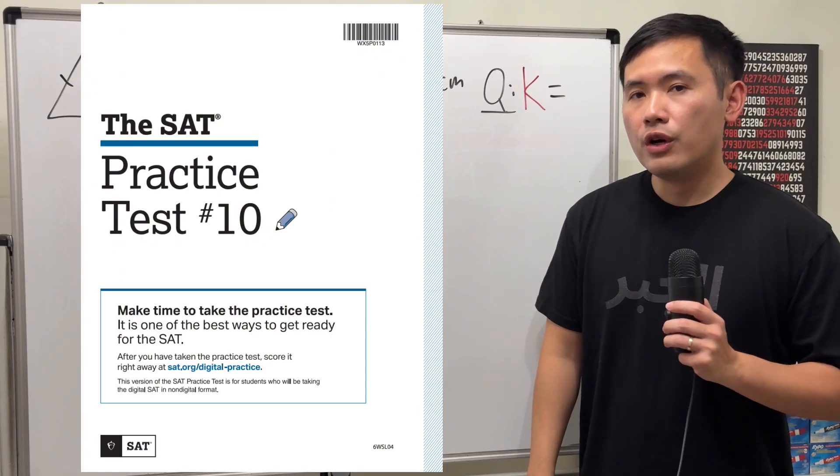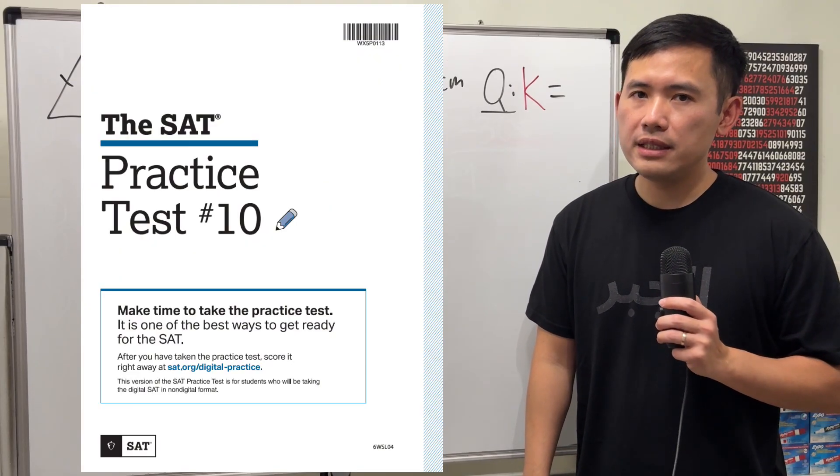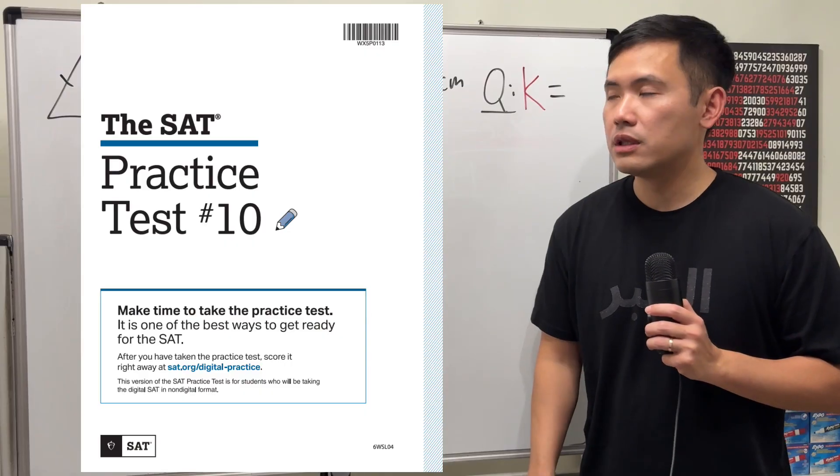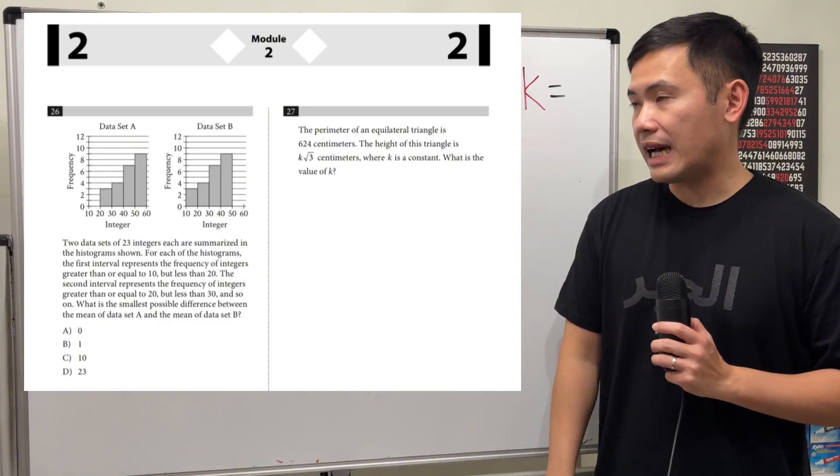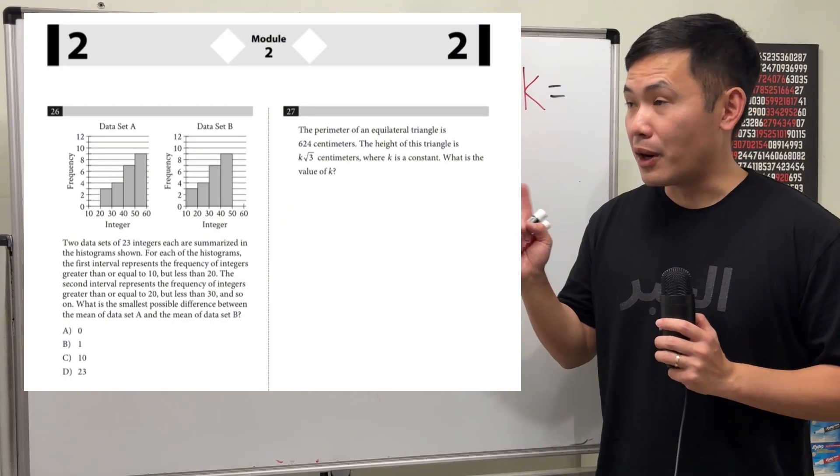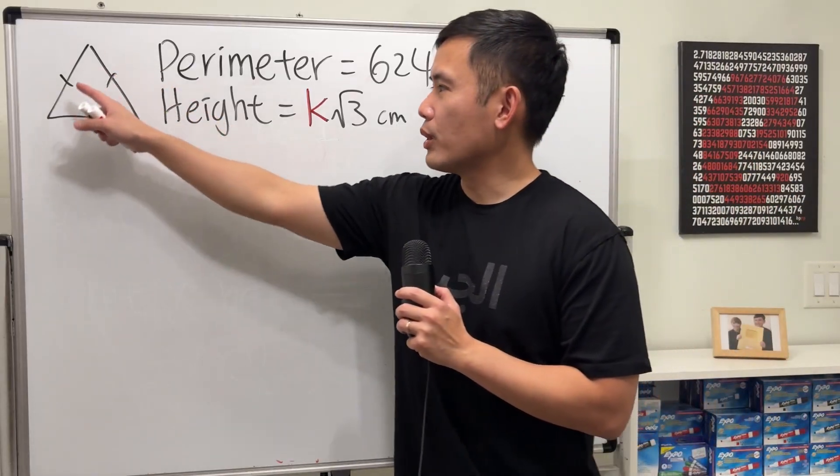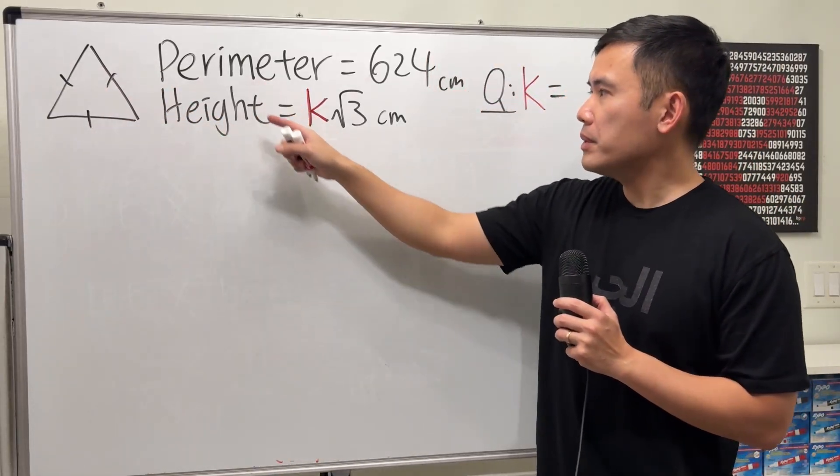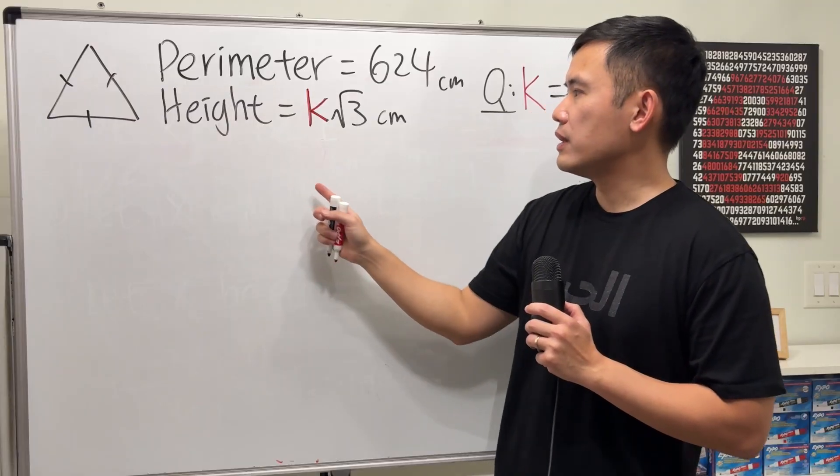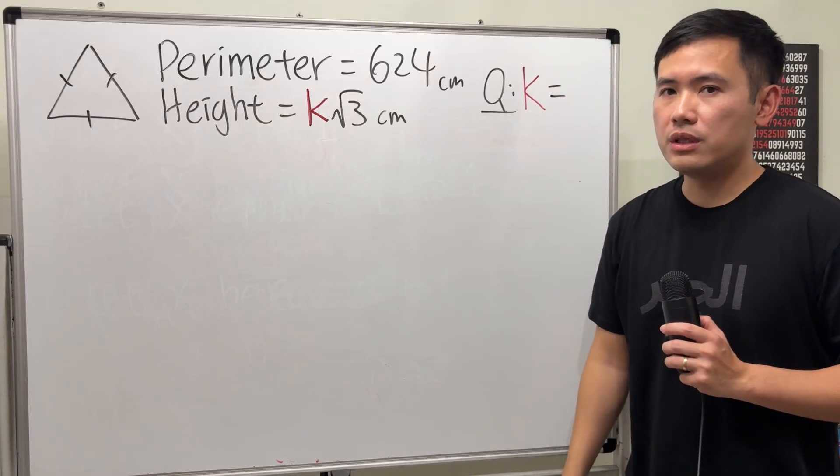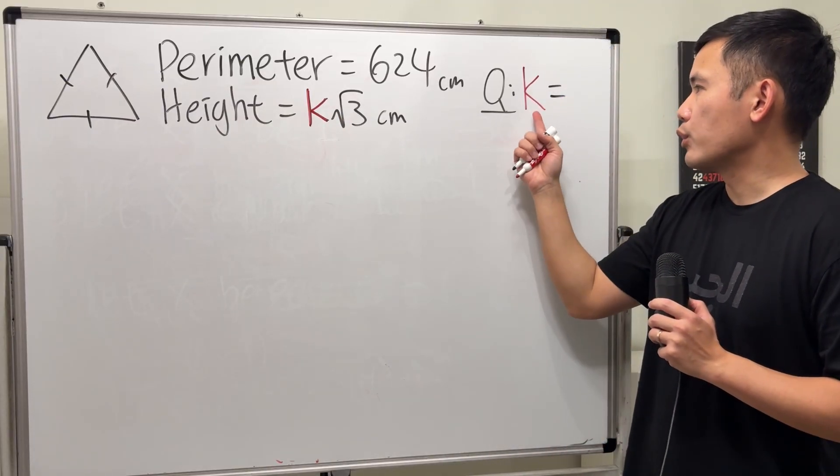Let's take a look at this geometry question from the official sample SAT practice test by College Board. And this is also the last question that they have on the test, so let's see how hard it is. We have an equilateral triangle, and we know the perimeter is 624, and the height of it is k times square root of 3. The question is asking us for the value of k.